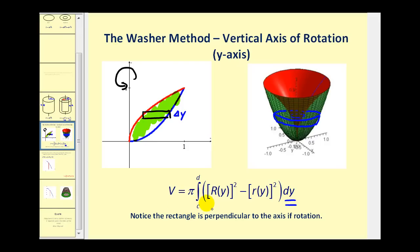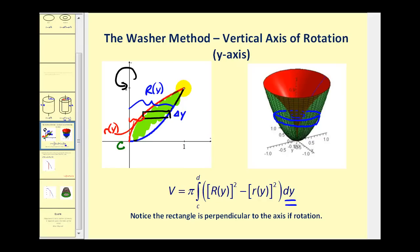Looking closely at the integral formula, you can see the volume of a cylinder: pi, R squared, and delta y representing the height. The outer radius is big R of y — the distance from the axis to the outer function, which is x expressed in terms of y. The inner radius, little r of y, is the distance from the axis to the inner function, also expressed in terms of y. We integrate on the interval from c to d along the y-axis.